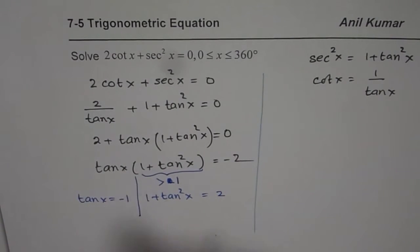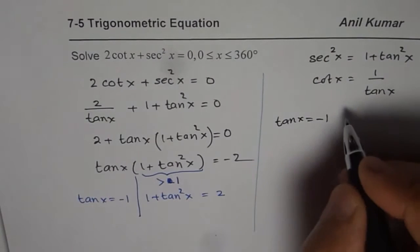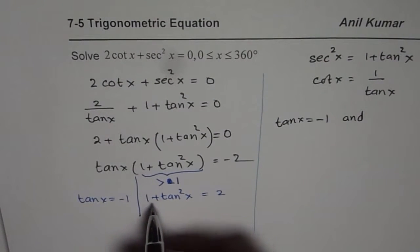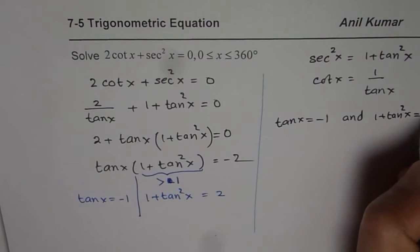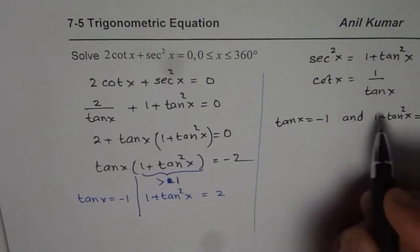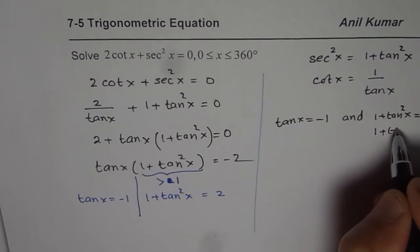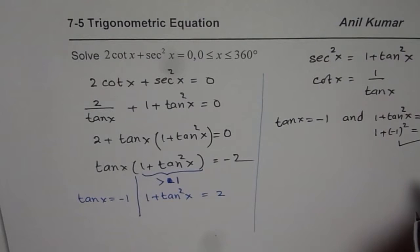So what we will now solve for is tan x equals to minus 1 and simultaneously we should have 1 plus tan square x equals to 2. It works. If tan x is minus 1, let us say tan x is minus 1, in that case 1 plus minus 1 whole square is going to be 2. So that is true.